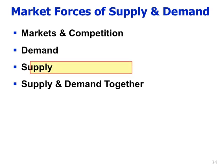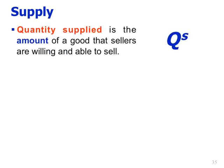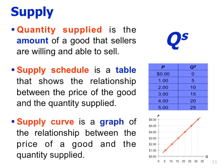That's the story of demand. Now let's do the same for supply. Quantity supplied is the amount of a good that sellers are willing and able to sell — it is a number. The supply schedule is a table showing the relationship between the price of the good and the quantity supplied. The supply curve is a graph of that relationship. Just like with demand, we have quantity supplied as a point, supply schedule as a table, and supply curve as a graph.